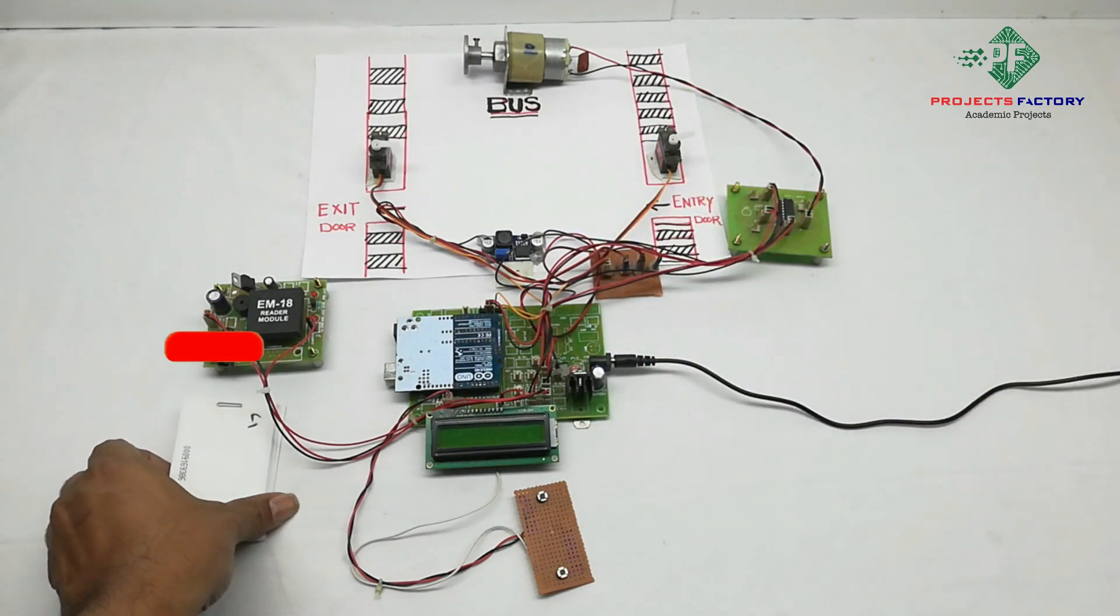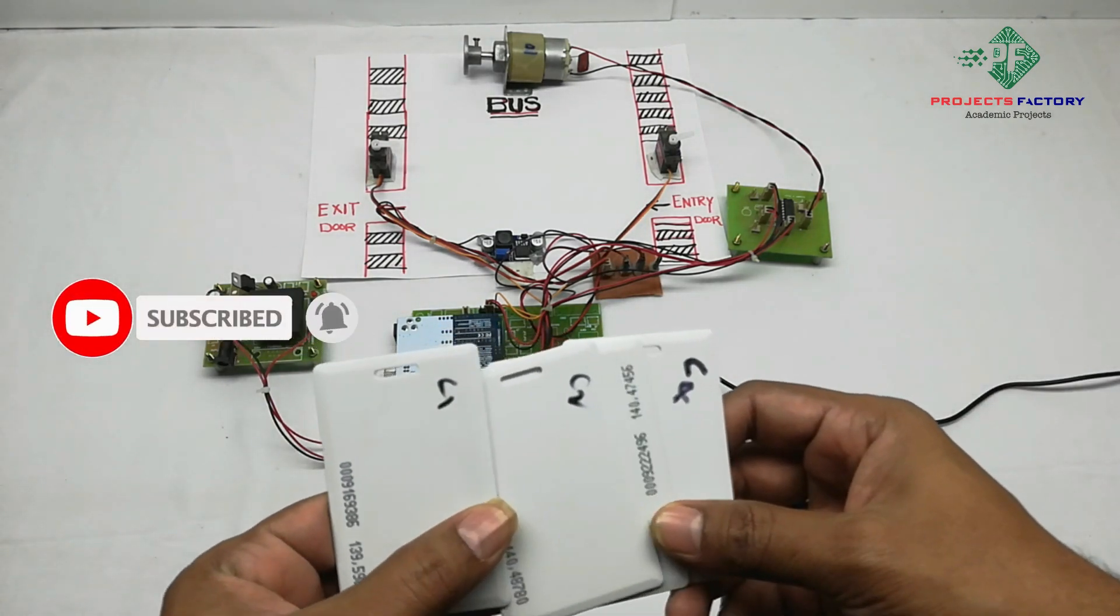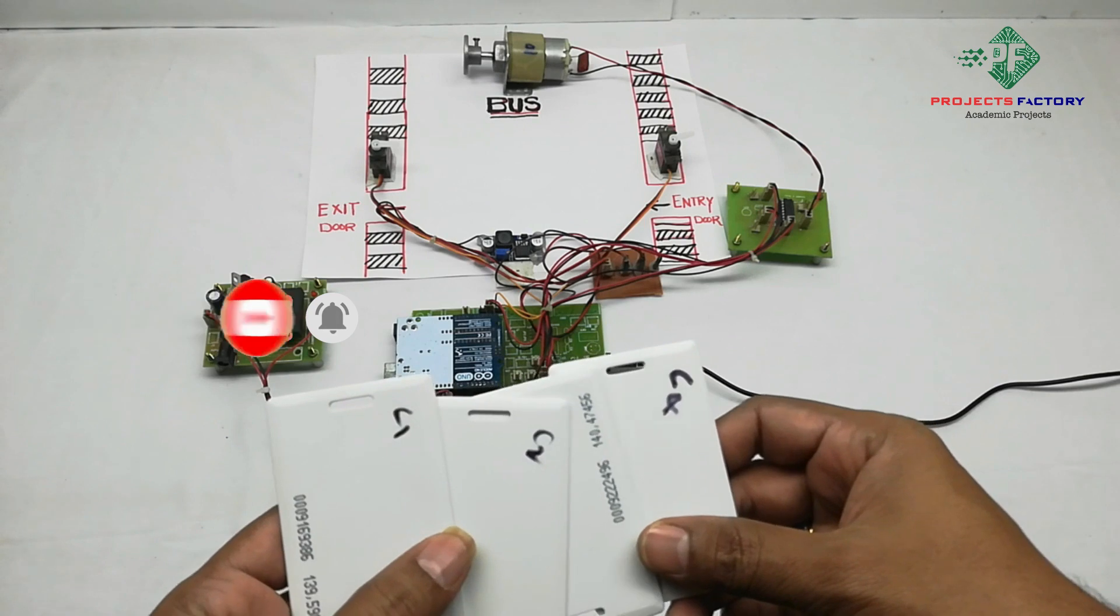There are four passengers here. Each one has an RFID smart card with 500 rupees balance amount.